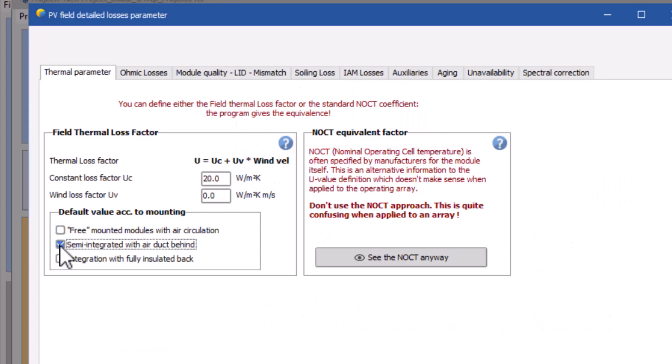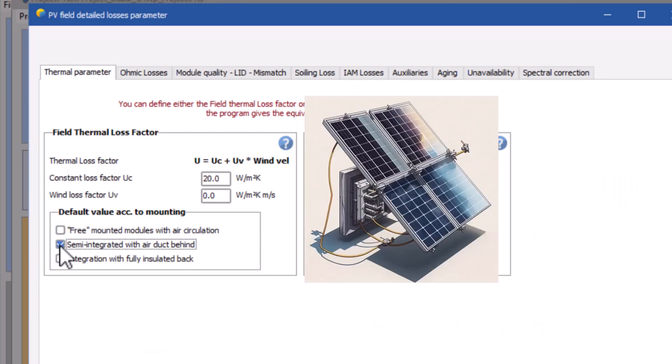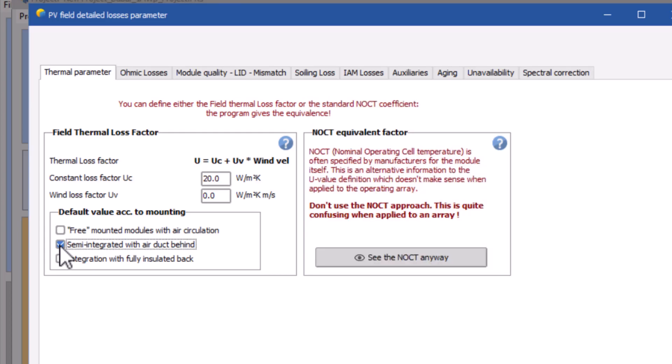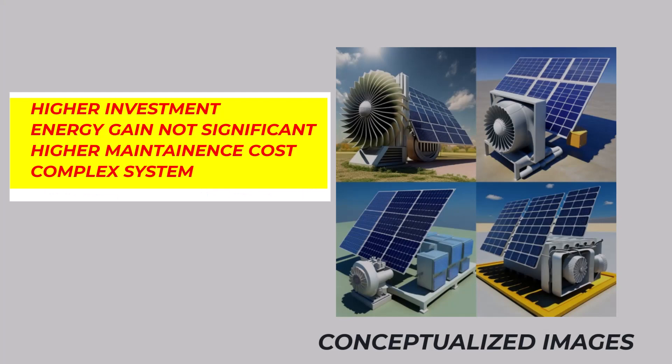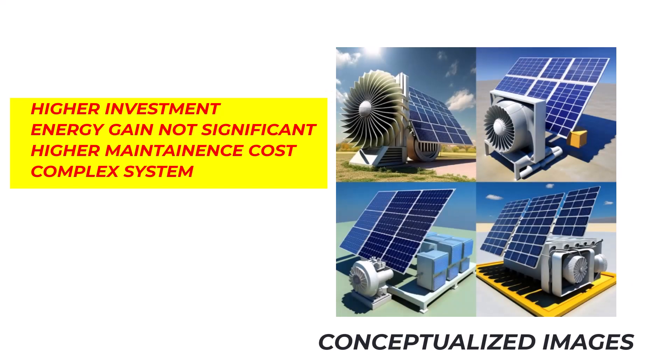The second option is semi-integrated with air duct behind. This means an external arrangement to naturally or forcefully blow air at the back side of the PV module, so that it loses temperature by convection and the temperature will be lower. This type is very rare nowadays as it adds capital investment and the energy gain from such an arrangement is not attractive compared to the complexity and cost.